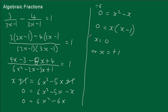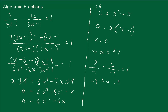It's always a good idea to check them back in the original equation. We try x equals 0: that's 3 over (2 times 0 minus 1), minus 4 over (3 times 0 minus 1), equals 1. So 3 over minus 1 is minus 3, minus 4 over minus 1 is plus 4. Minus 3 plus 4 is 1. That one works.